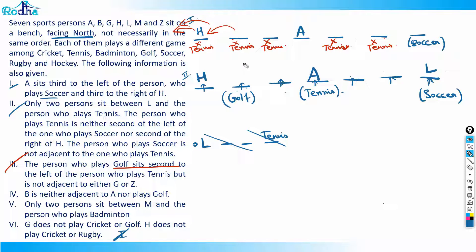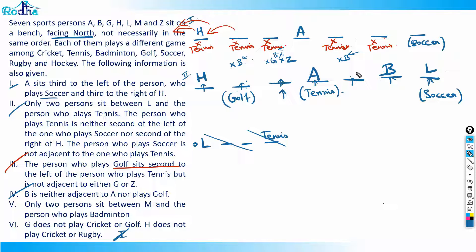Golf is not adjacent to G or Z, so the positions adjacent to golf cannot be G or Z. Also from point four: B is not adjacent to A and does not play golf. Checking all the crossed positions, B is crossed at multiple spots, leaving only one valid position for B. So B is placed. All conditions through point four are now applied.